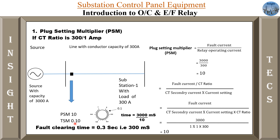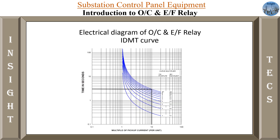In today's video, we are going to learn how this setting and how the time of 3 seconds is achieved from the curve and how the curve plotting is done. This is the IDMT curve. As you can see, if the pickup current setting multiplier is 10, then according to this graph, the time taken in seconds will be about 3 seconds. We will learn how this curve is plotted and how this 3 seconds is achieved.